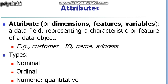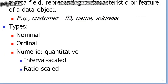To apply any data mining algorithm or data pre-processing technique, you should first know the type of attributes your data object contains. An attribute is also referred to as a dimension, feature, or variable — these are all synonyms. An attribute is a data field representing a distinct characteristic of a data object. For example, for a customer: customer ID, name, and address are each data fields representing distinct characteristics.